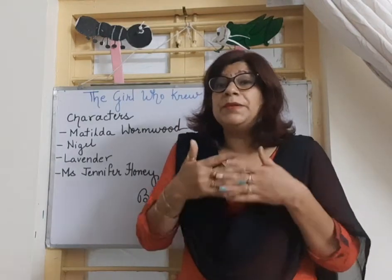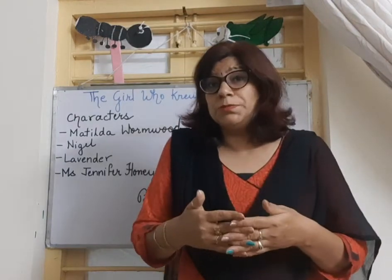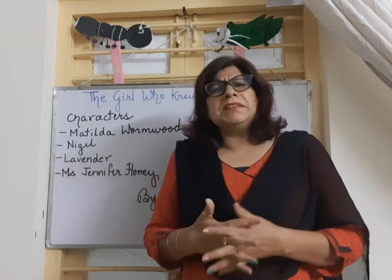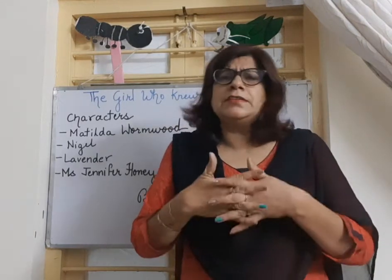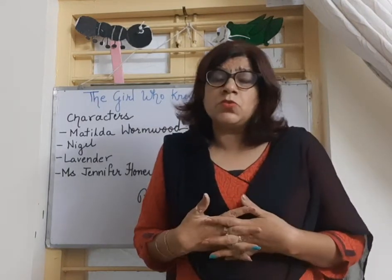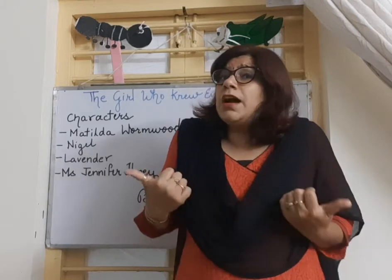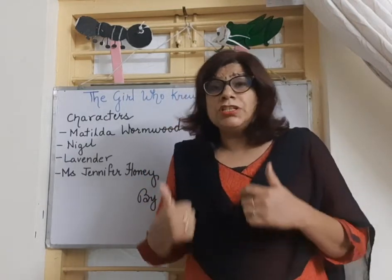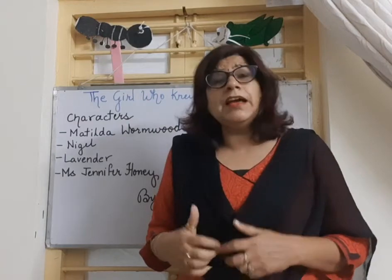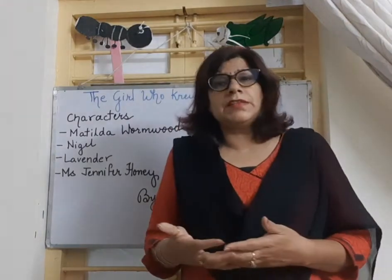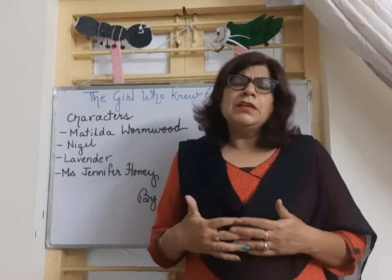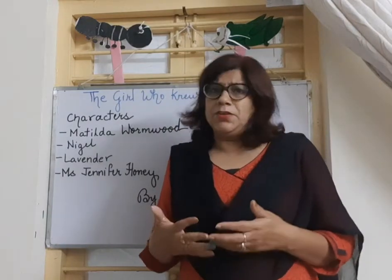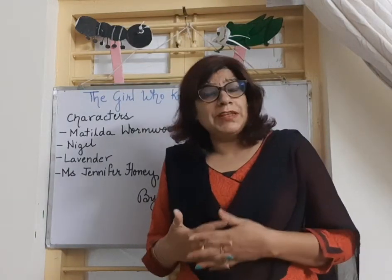Matilda admits to Miss Honey that she can read many sentences, even very difficult ones, but she may not always understand the meaning of those sentences. She was sharp and intelligent, and honestly admitted she could read the sentences but might not understand the meaning of many of them. The teacher was very happy with her honesty.